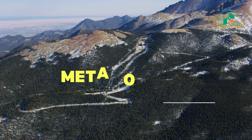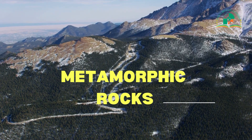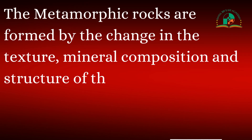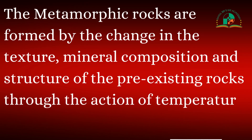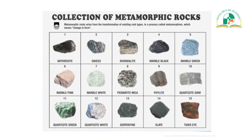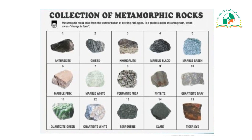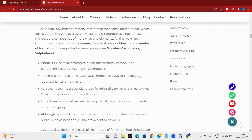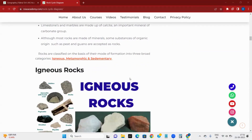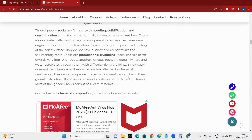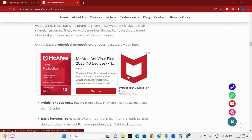There is a third category of rocks called metamorphic rocks. The rocks formed by the changes in texture, mineral composition, and structure of pre-existing rocks through the action of temperature and pressure are called metamorphic rocks. Some examples are gneiss, marble, quartzite, anthracite, and slate. For details on all these rock types, please visit our blog by the name Rock Cycle Diagram, whose link has been provided in the description.